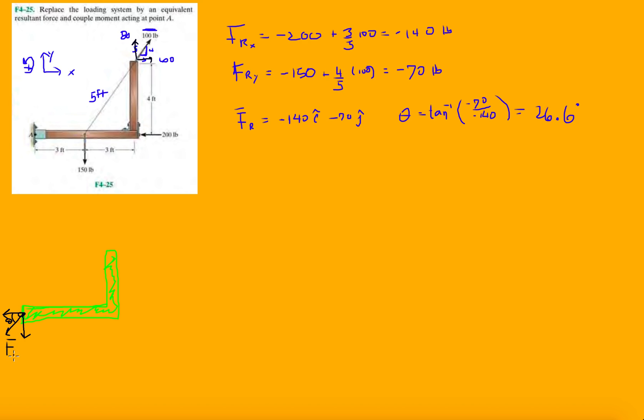This is FR. The magnitude of FR is square root of 140² plus 70², which equals 156.5 pounds. So FR is 156.5 pounds. Now we've replaced all the forces - notice I didn't draw any force here, I've taken all those forces and bunched them up at point A.